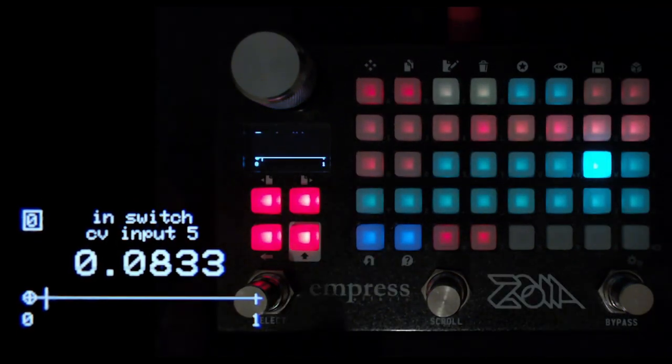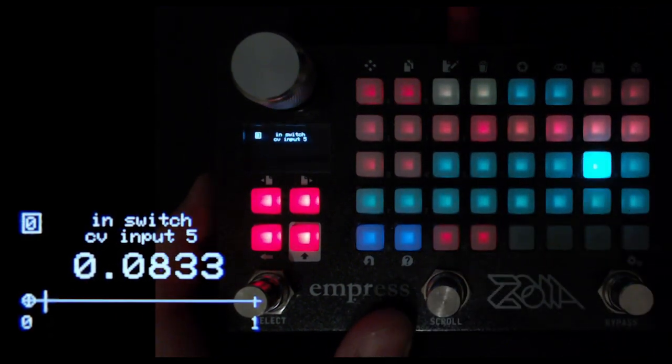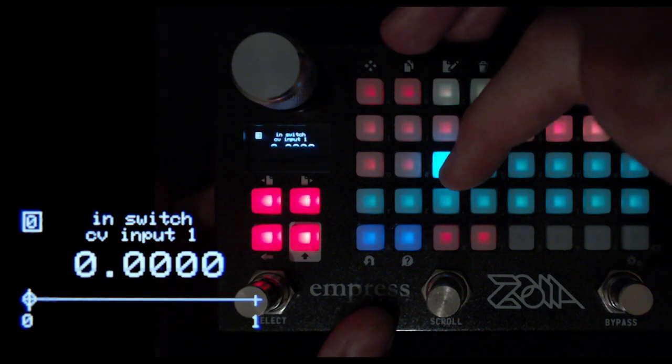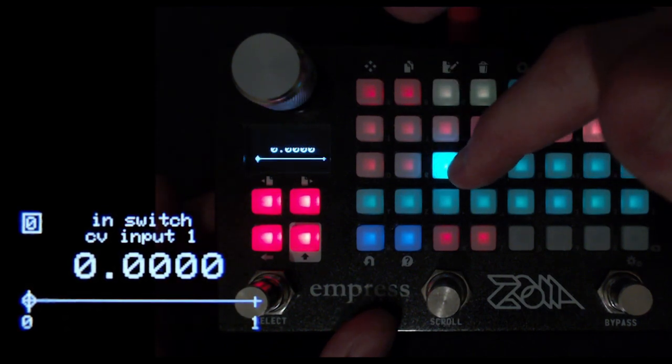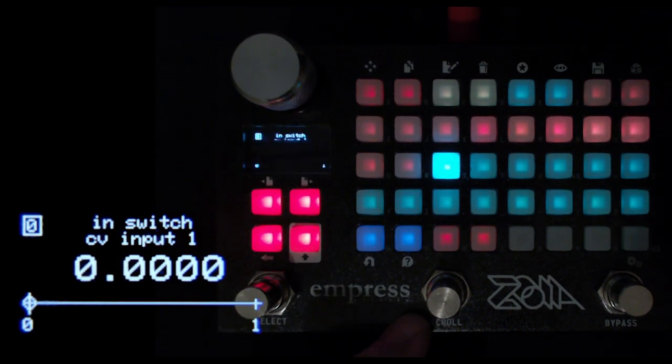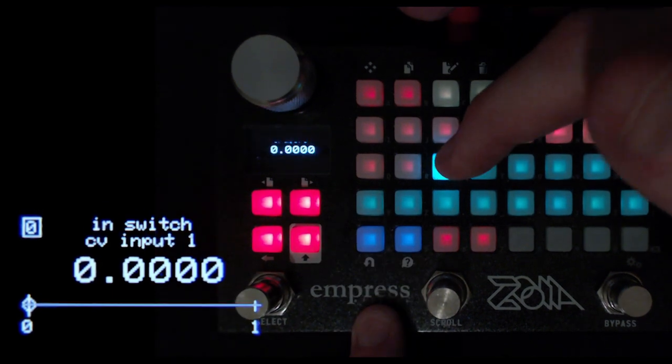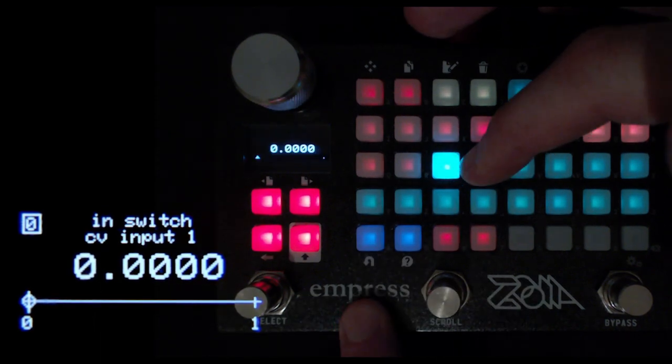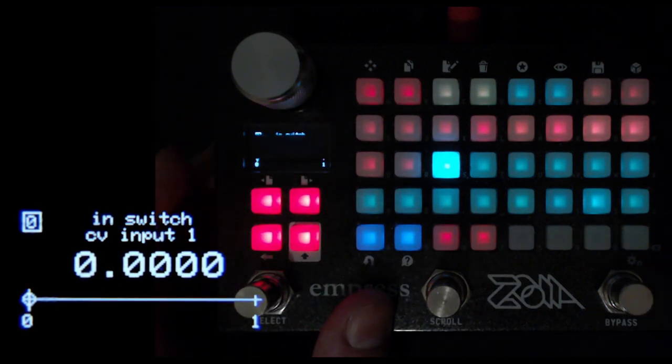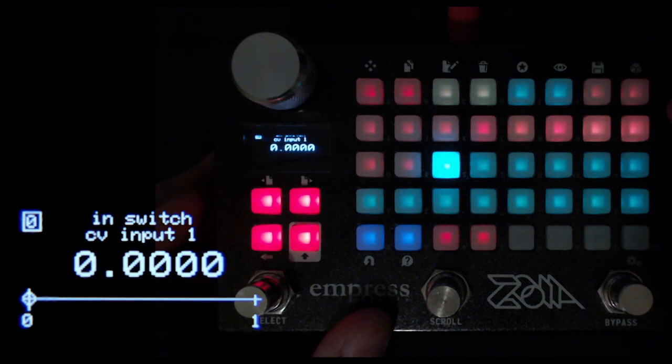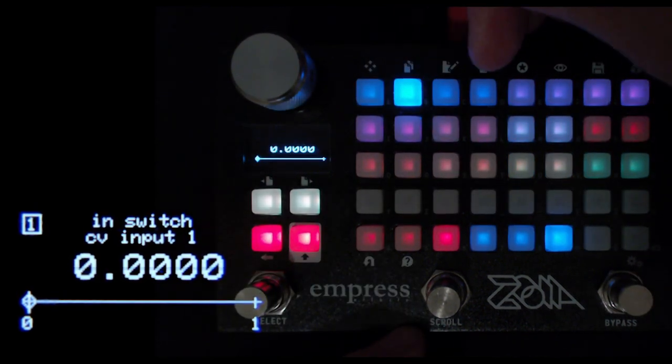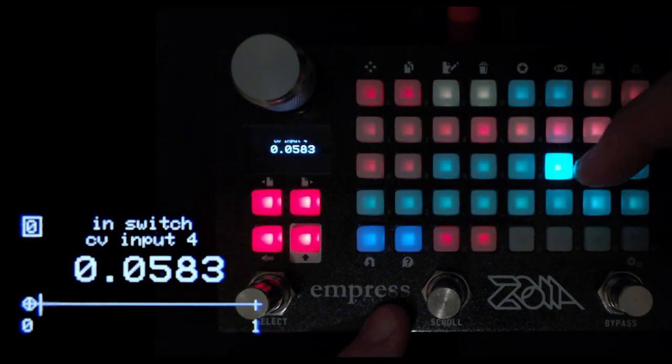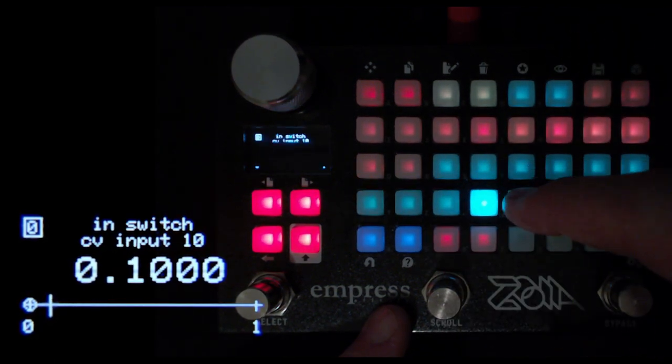Each of these pads have got a value that corresponds to the scale. Because I want to be able to redefine the scale easily, these ones don't have the scale definition in them. It's actually easier to use value modules as a definition and then send the value from these. Each of these 12 value modules that define the scale are sent to each of these 12 channels on the in-switch.